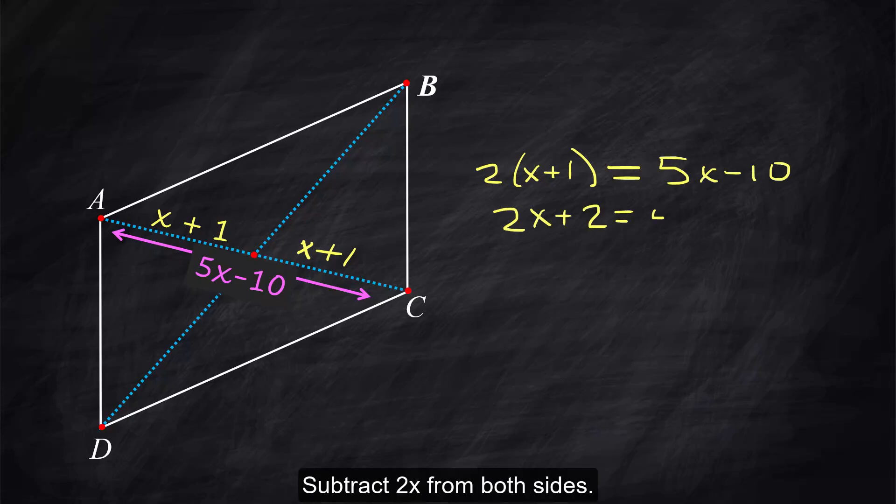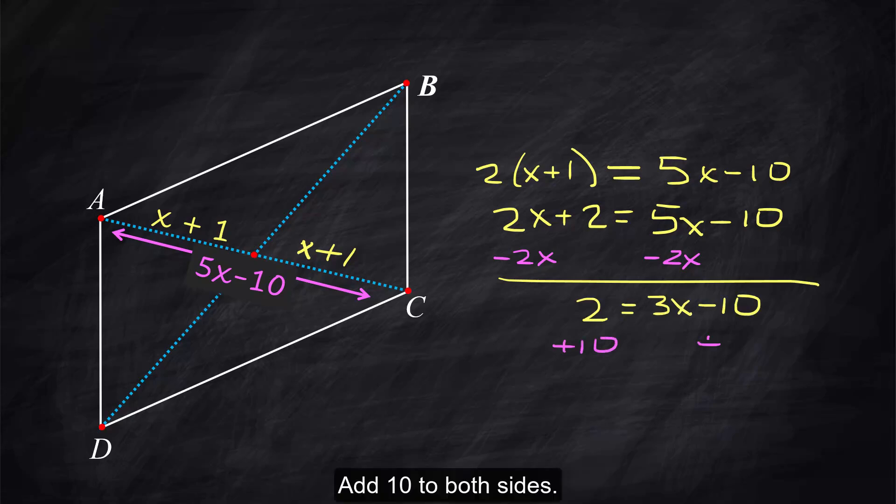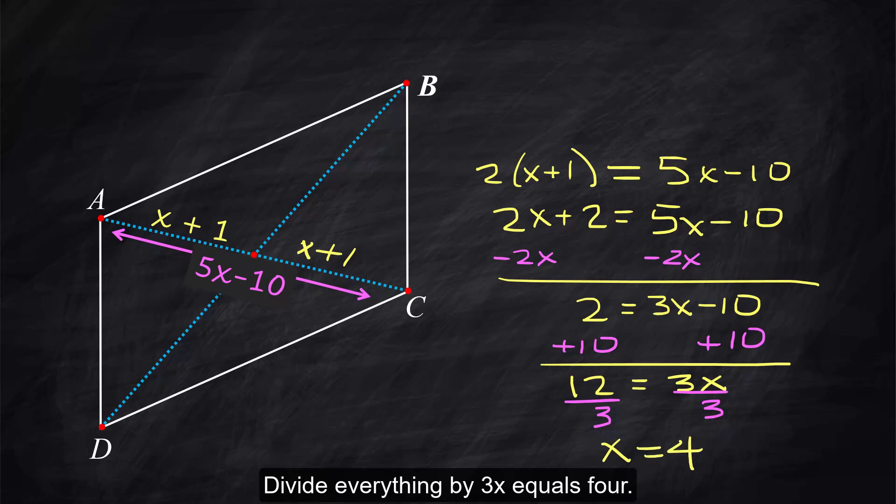Now we do some algebra subtract 2x from both sides we get 2 equals 3x minus 10 add 10 to both sides 12 equals 3x divide everything by 3 x equals 4.